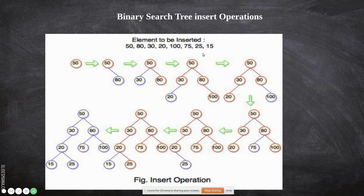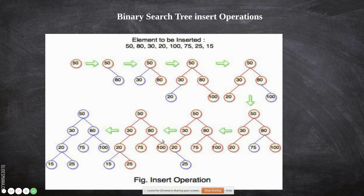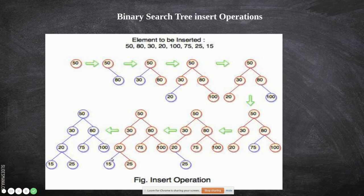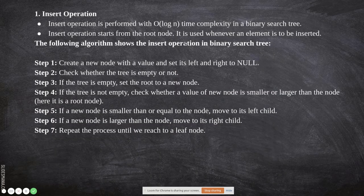Next, 75 — it is greater than 50 so go right to 80; it is lesser than 80 so it is inserted as the left child of 80. Then 25 — lesser than 50 so go left to 30; lesser than 30 so go left to 20; but it is greater than 20, so it is inserted as the right child of 20. Then we insert another value — lesser than root so move left; lesser than that node so move left again; and it is inserted as the left child. This is how insertion works.